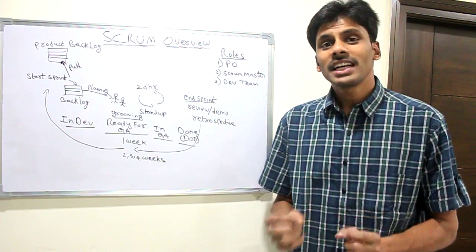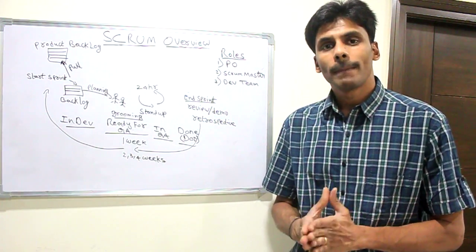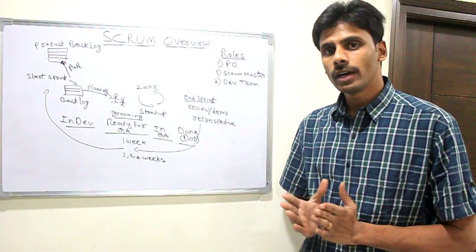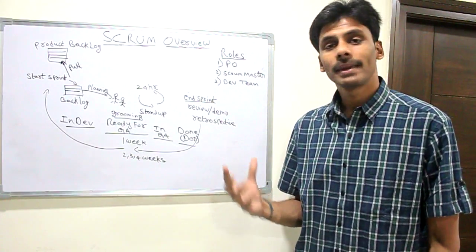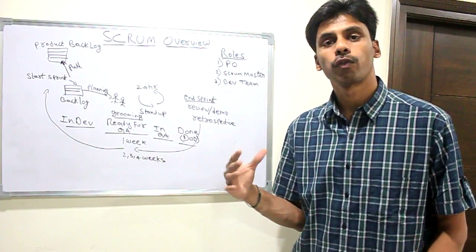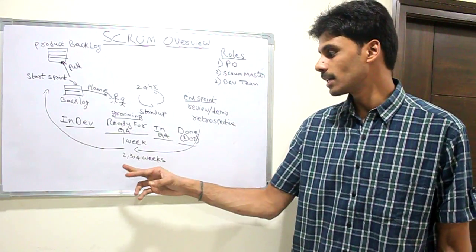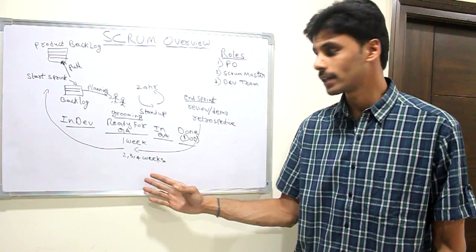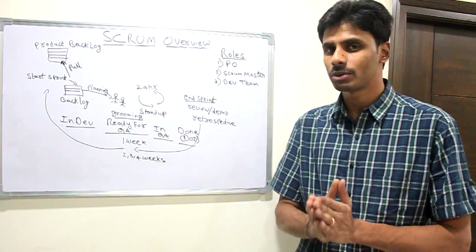It's called a sprint. Sprint is nothing but a time-boxed development effort. In the scrum world, a sprint can be of one week, two weeks, or four weeks. Four weeks is the maximum. I have seen teams which have used two weeks, three weeks, and four weeks. I haven't seen a team which has used one week, which is too short.